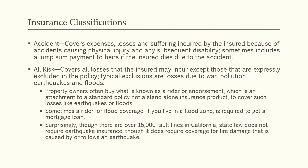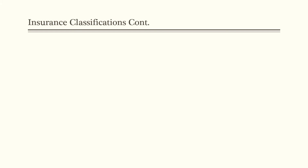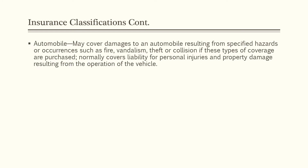Surprisingly, there are over 16,000 fault lines in California. State law does not require earthquake insurance, though it does require coverage for fire damage that is caused by or follows an earthquake. The next type of major insurance is automobile insurance. It may cover damages to an automobile resulting from specified hazards or occurrences such as fire, vandalism, theft, or collision if these types of coverage are purchased. Normally it covers liability for personal injuries and property damage resulting from the operation of a vehicle.